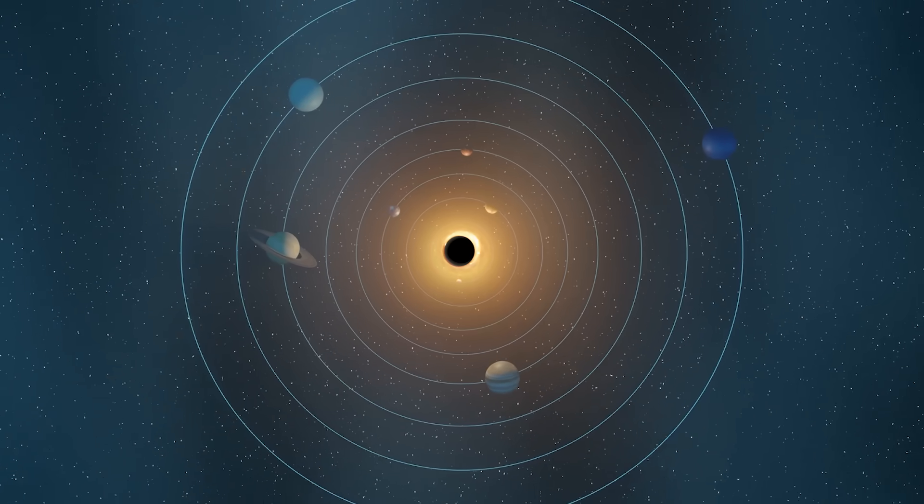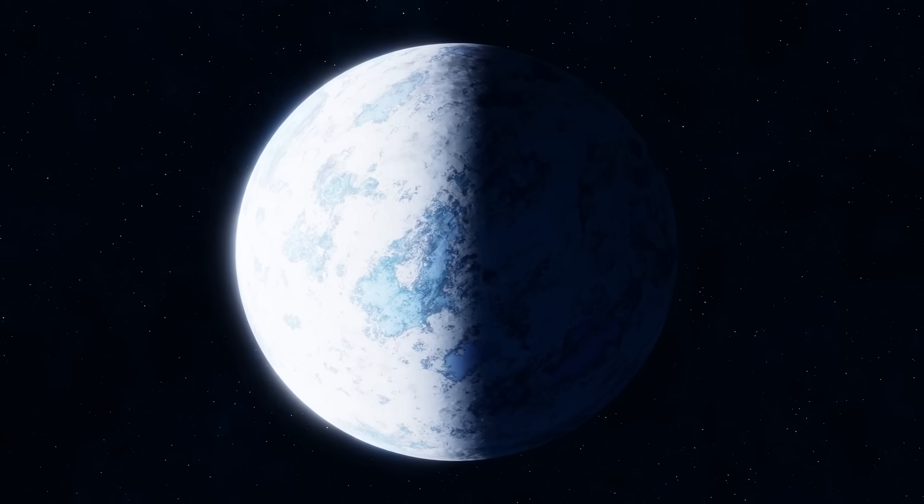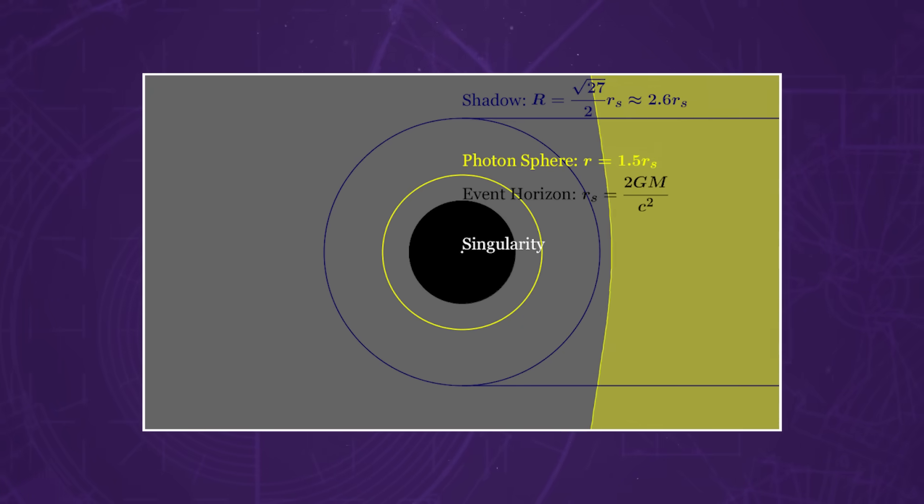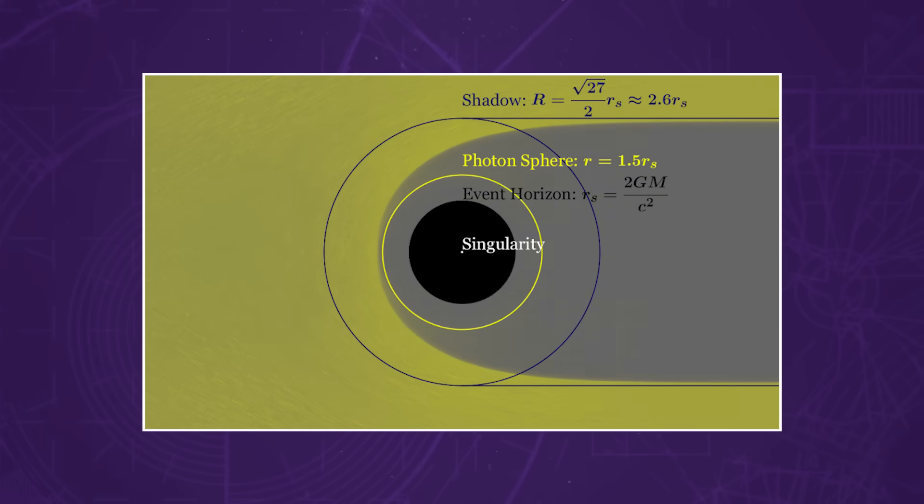For instance, if you were to replace our sun with a small black hole of the exact same mass, the planets would continue orbiting as usual, as if nothing had changed. Of course our planet would become inhospitable without the sun's warmth, but we wouldn't suddenly be sucked into the center of the solar system. In fact, it's not just objects that can orbit a black hole — even light itself can. There is a specific radius called the photon sphere, where light is trapped in a perfectly circular orbit, balanced on the perfect trajectory to avoid both falling past the event horizon or escaping into free space.